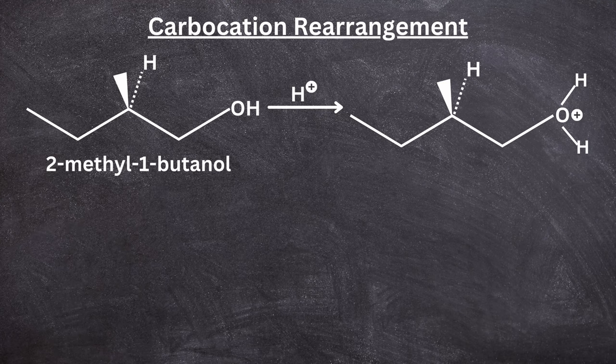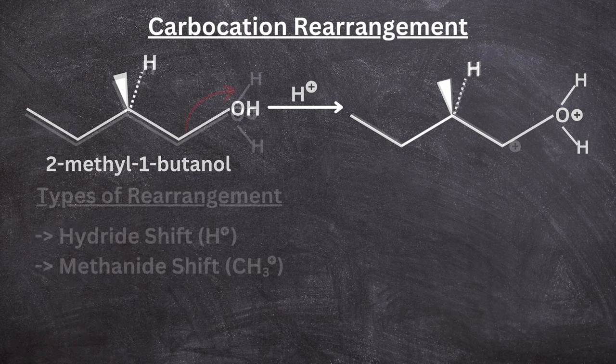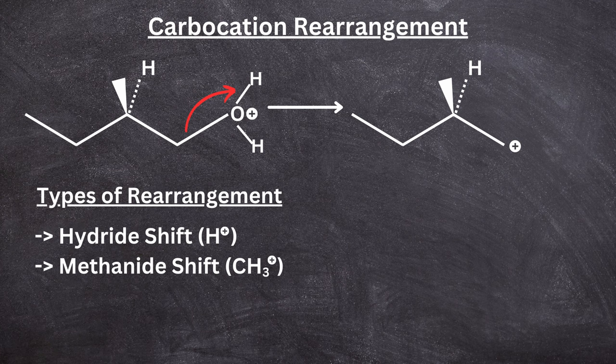Due to the carbocation intermediate, we can explore this rearrangement. This molecule, 2-methyl-1-butanol, protonates and we get a water molecule with an ion on oxygen. Then the leaving group leaves and we get this molecule giving a carbocation on carbon number one.